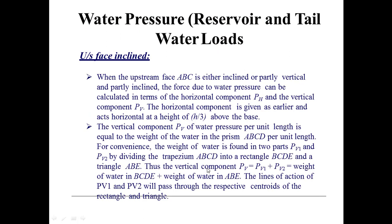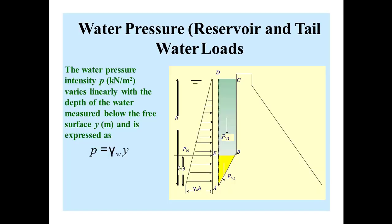The total vertical component PV equals PV1 plus PV2, which is the total weight of the water pressure per unit length. PV1 and PV2 each pass through the respective centroid of the rectangle and the triangle.